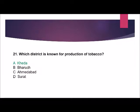Question number 21: Which district is known for the production of tobacco? Options are: Kheda, Bharuch, Ahmedabad, or Surat. The correct answer is Kheda.